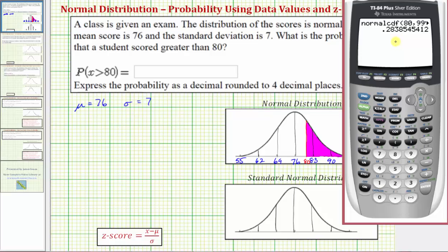To four decimal places, this would be approximately 0.2839, because notice how the fifth decimal place is a five, which means you round up. If it was four or less, we would round down. So the probability again is approximately 0.2839.